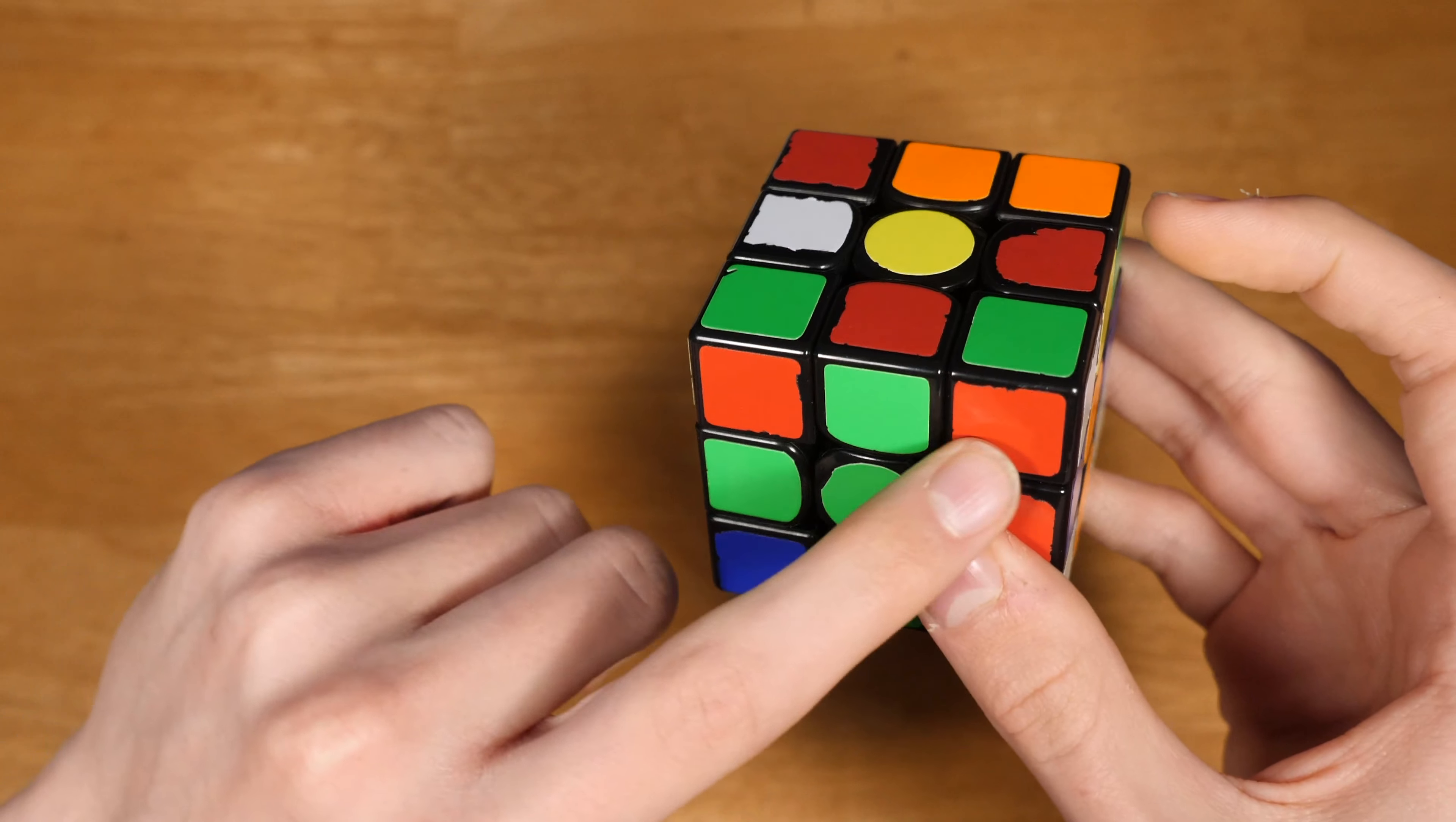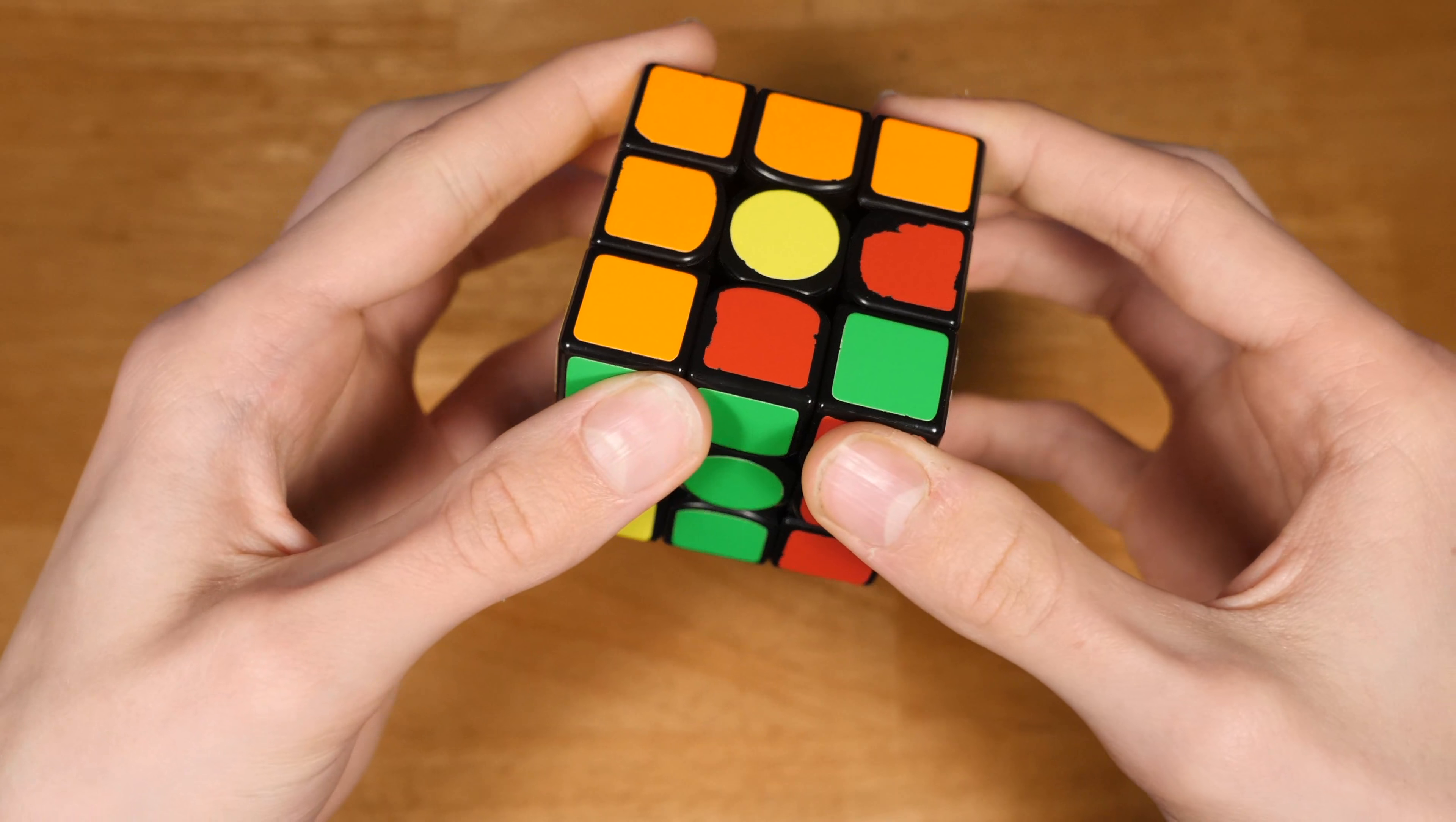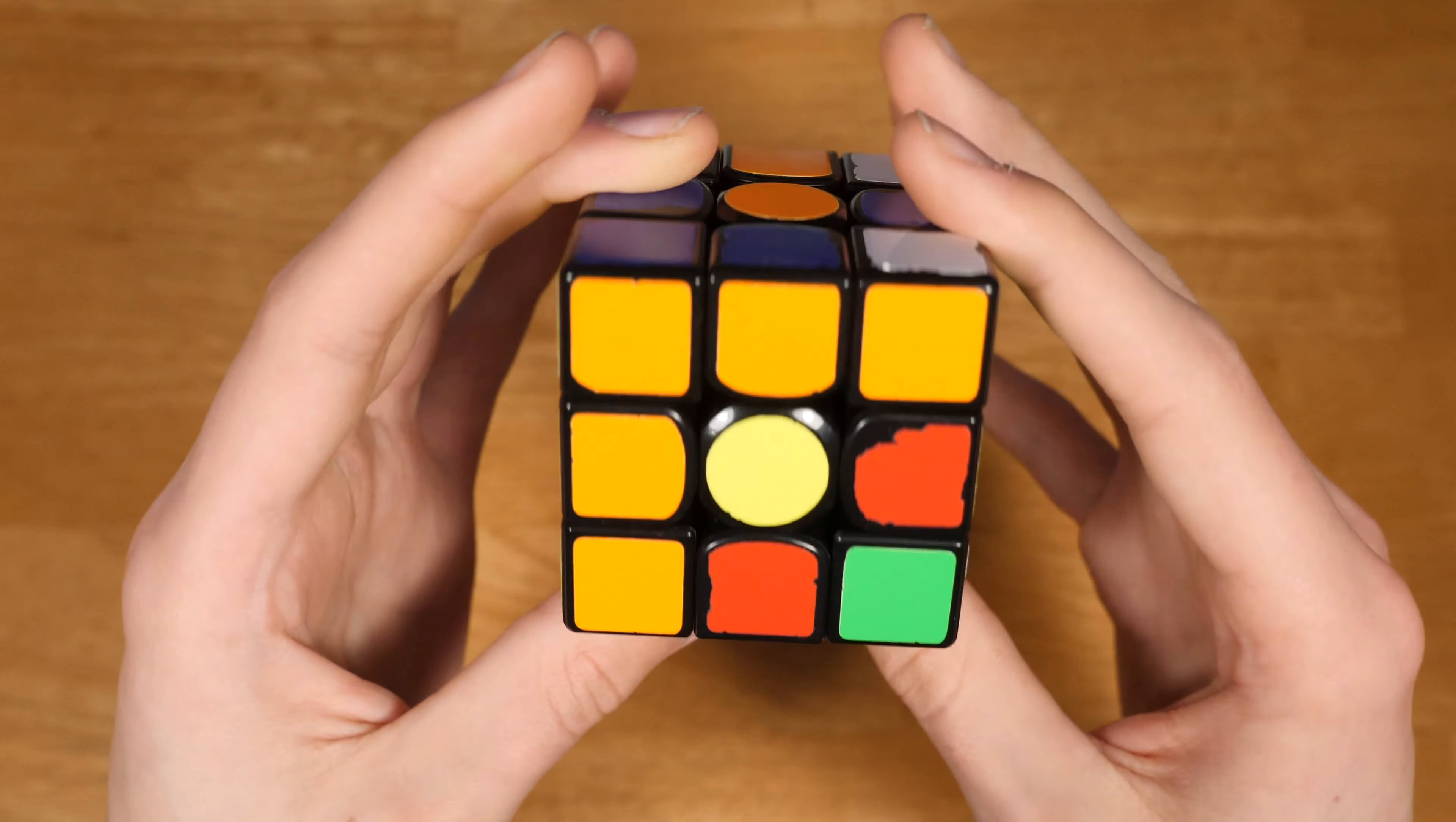He saw this one ahead of time, and I'm assuming he also saw this first pair. So he goes right into it. Instead of a U and then rotation, he does a D, which is a classic Max Park technique.